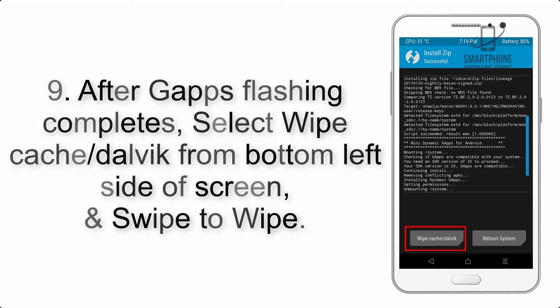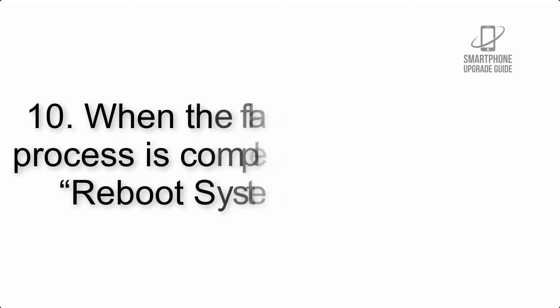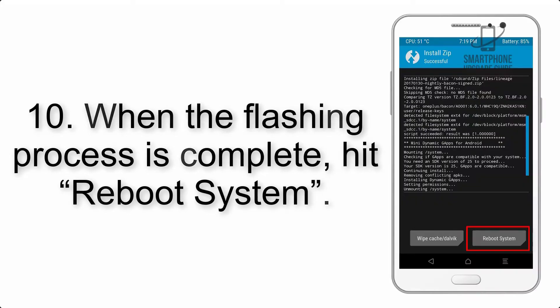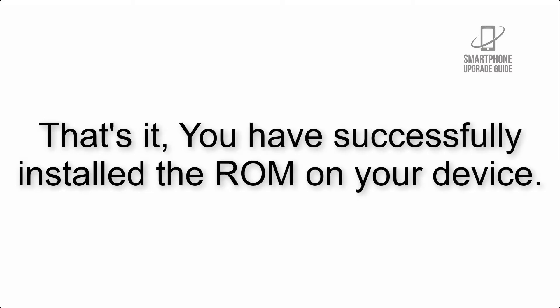Step 8: Flash the GApps zip package in the same manner. Step 9: After GApps flashing completes, select Wipe Cache and Dalvik from the bottom left side of the screen and swipe to wipe. Step 10: When the flashing process is complete, hit Reboot System. That's it — you have successfully installed the ROM on your device.